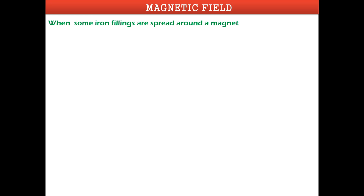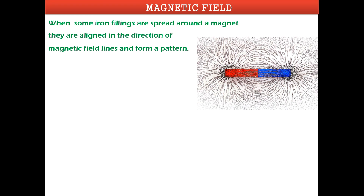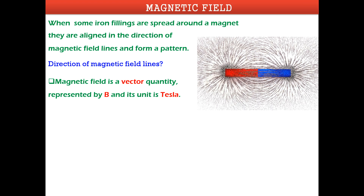When iron filings are spread around a magnet, they align in specific directions, showing that there is a magnetic field around the magnet. These filings align regularly, not randomly, forming a pattern. These lines are known as magnetic field lines. Magnetic field is a vector quantity, represented by B and measured in tesla. We must assign a direction to the magnetic field for mathematical calculations.